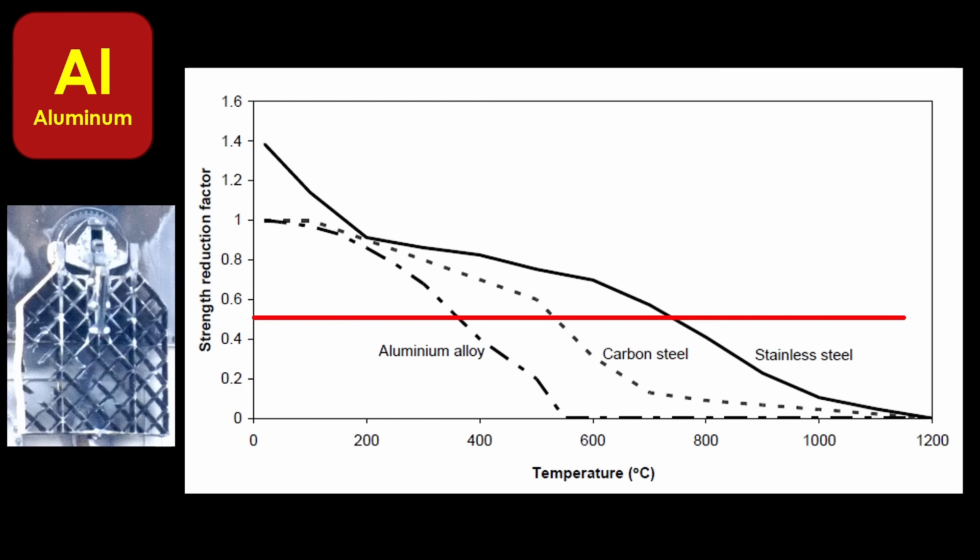In fact, SpaceX originally flew aluminum grid fins on the Falcon 9, but they had a tendency to melt even with the relatively small amount of heating experienced by the booster. Not a great material for the high temperatures that come with re-entry. The fin that survived the IFT-4 flight would have melted off the Starship body very early in re-entry, and the vehicle would not have survived.